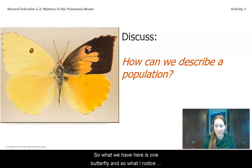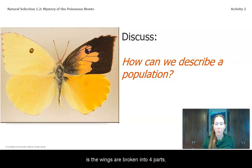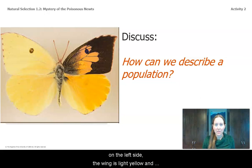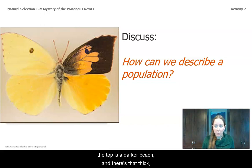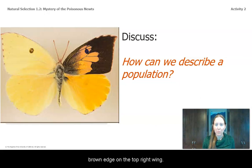So what we have here is one butterfly, and what I notice is the wings are broken into four parts. On the left side, the wing is light yellow and peach, and then it has a brown dot on the top part of the wing. The right wing is much darker — the bottom is a darker yellow, the top is a darker peach, and there's a thick brown edge on the top right wing, and instead of having a brown dot, it has a blue dot.